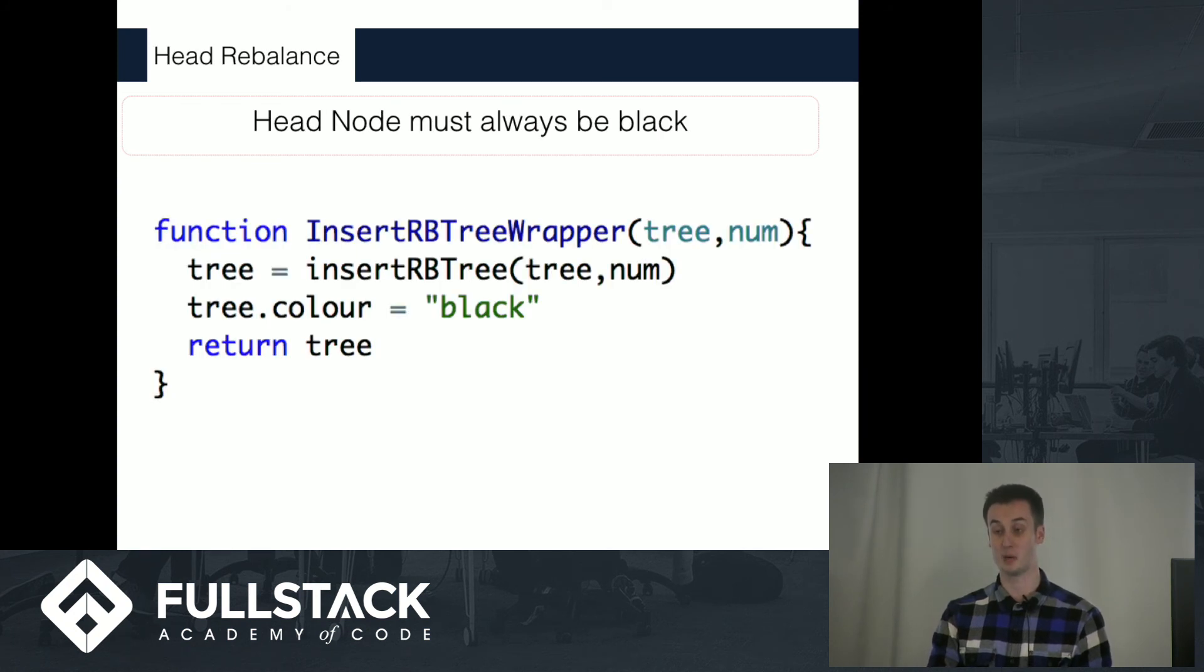Once we get up to the top of the node, this insert tree function that I've been showing on every slide would actually be inside some sort of wrapper function, which ensures that once we get up to the top of the tree, we recolor the head node black. As I mentioned several slides ago, the head of the tree must always be black.